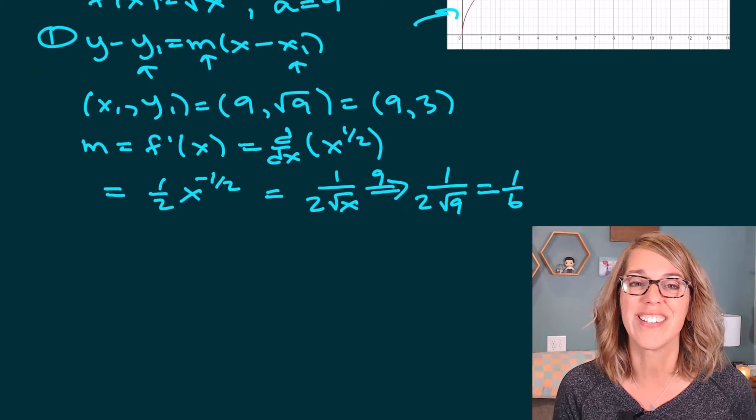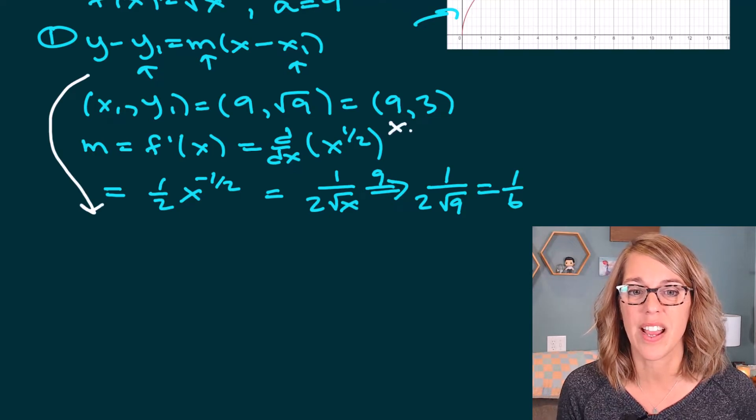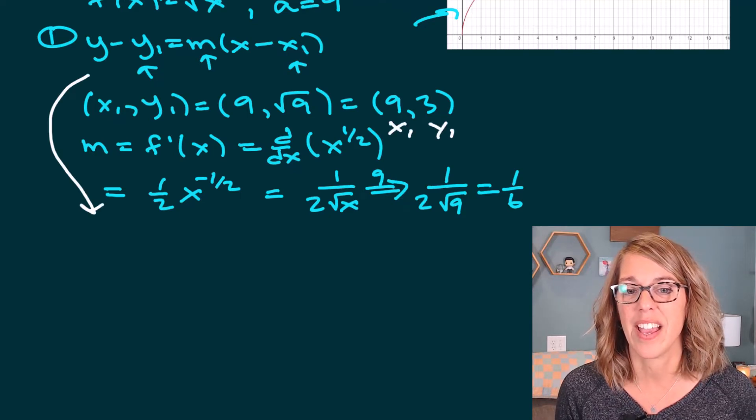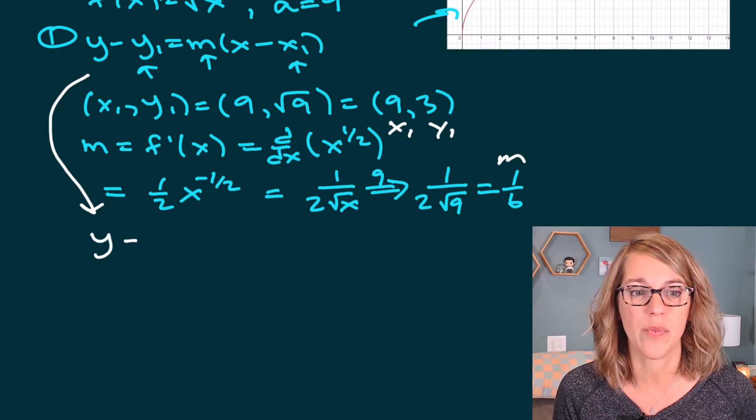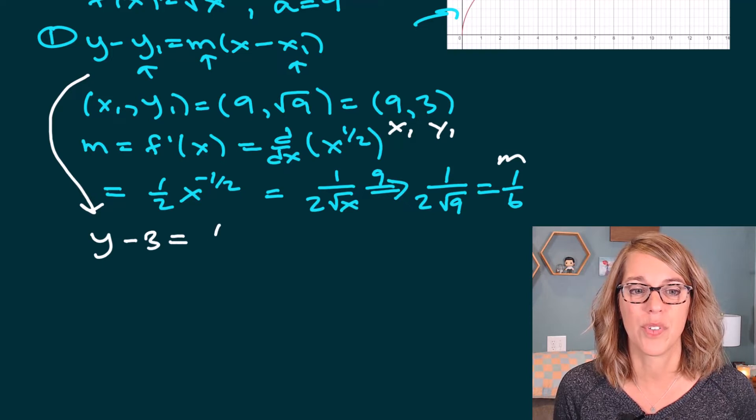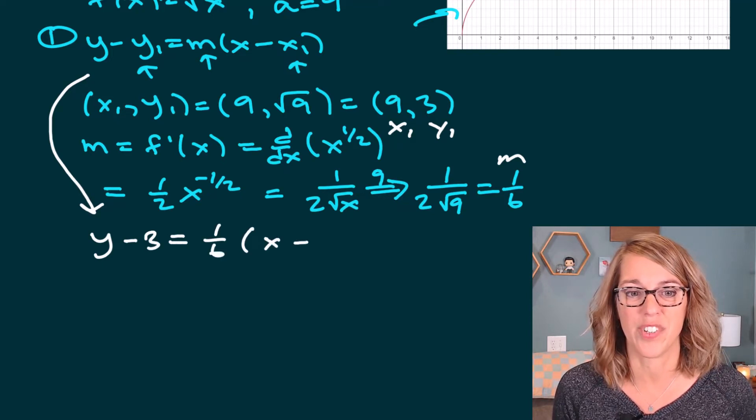So I'm almost done with the hard part. I've got my point, which is here, x₁ and y₁, and I've got my slope, which is m. So our equation is going to be y minus y₁, which is 3, is equal to 1/6 times (x minus x₁), which is 9.